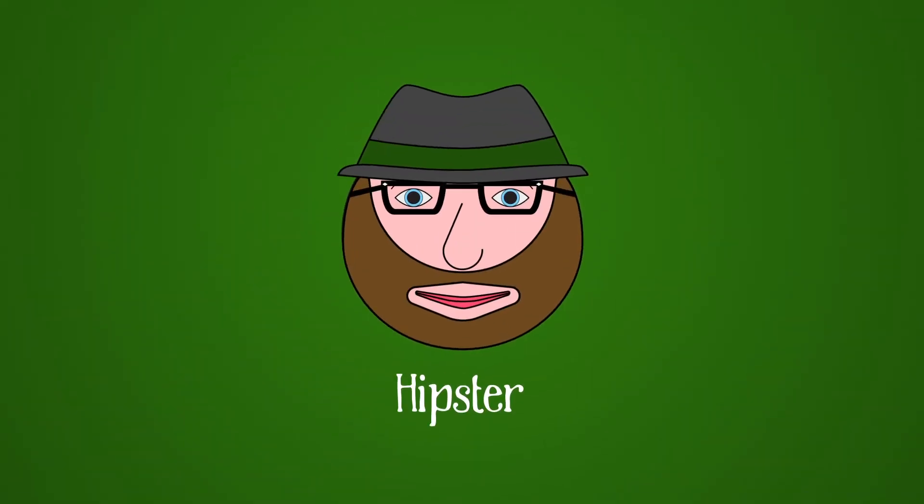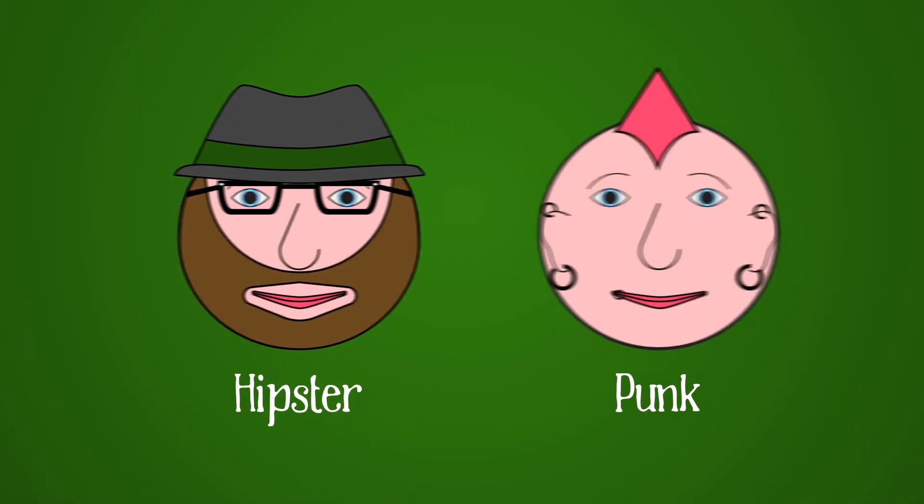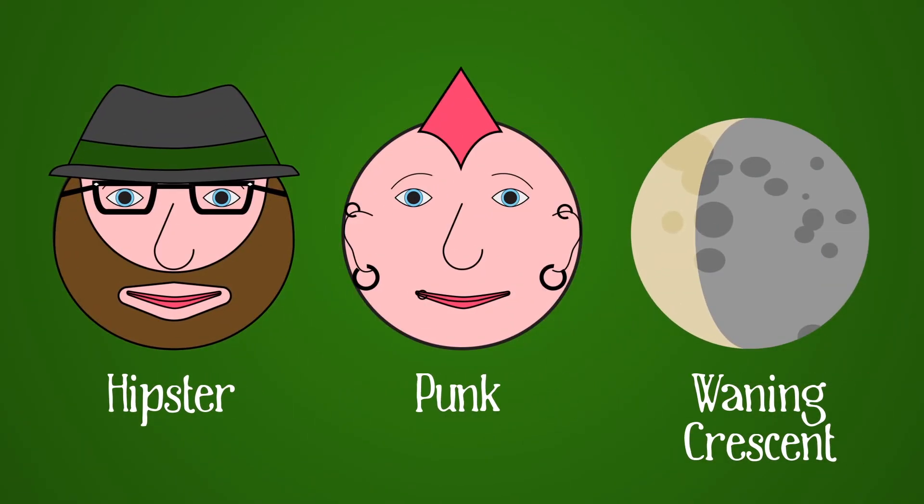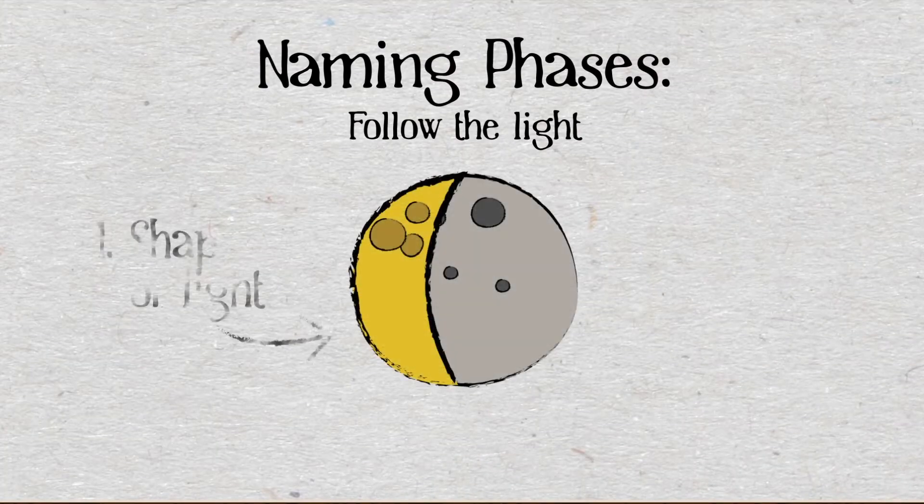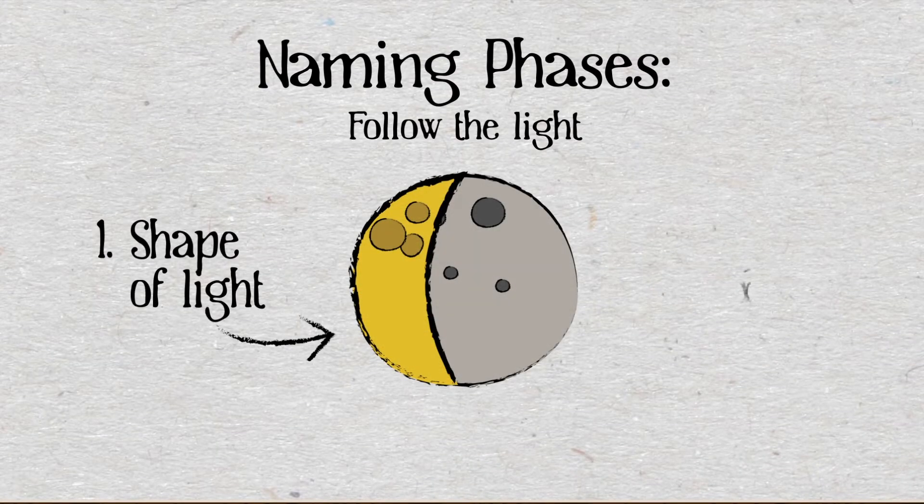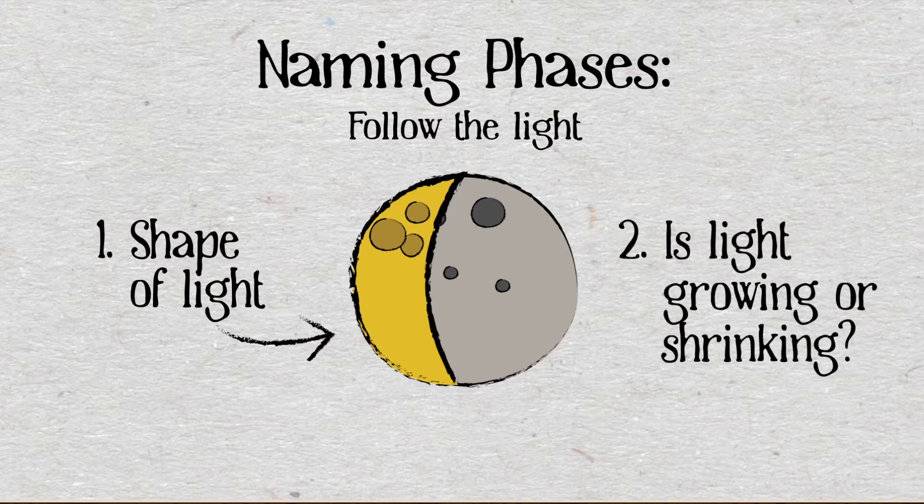Now, we all know that people have nicknames, and so does the moon. These names are called phases, and they work like this. The phase of the moon is determined by the size of the sun's light on its face, and whether that light is getting bigger or smaller.